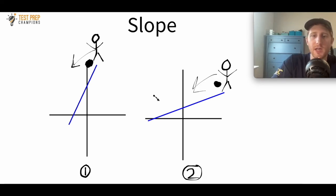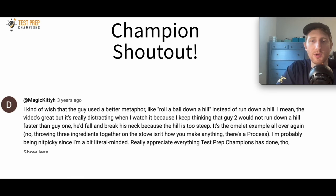In a previous video I used running down the hill as an example instead of rolling a ball. A test taker commented that it might be better to use rolling the ball down the hill, and I actually like that idea, so that's why I put it in this video. I did find that comment from my previous video on slope — I'll put a link to that video down below. I just want to give that test taker credit because I think it's a good idea. So champion shout out to the person who recommended it.